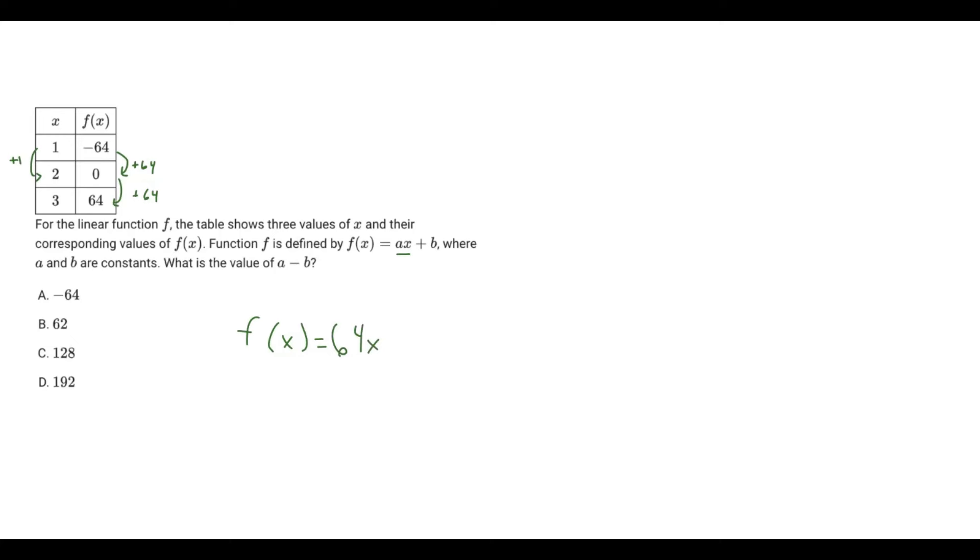Now we want to determine b. So b is the y-intercept, and the y-intercept is the value you get when x is zero. It's not on here, but we can predict what it is. The difference between one and zero is an x value of one, so plus one here.